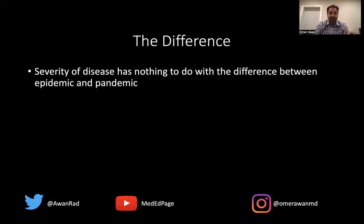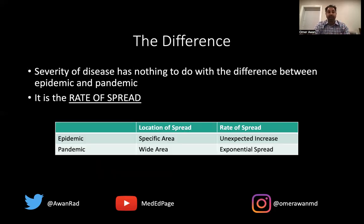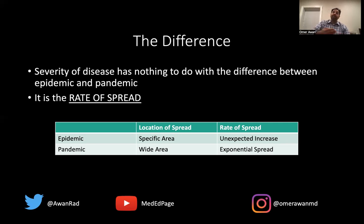To put this into perspective, the severity of the disease really has nothing to do with these terms — epidemic and pandemic. How lethal the disease is, how many ICU admissions — nothing to do with the words epidemic and pandemic. It really relates to the rate of spread. In an epidemic, we're looking at a specific area, confined to a specific region, whereas a pandemic can spread to the entire world, multiple countries, multiple continents. An epidemic will have an unexpected increase in the number of cases, whereas in a pandemic the increase is often exponential — we can't control it, it keeps spreading, and the spread tomorrow will be more than the spread today.